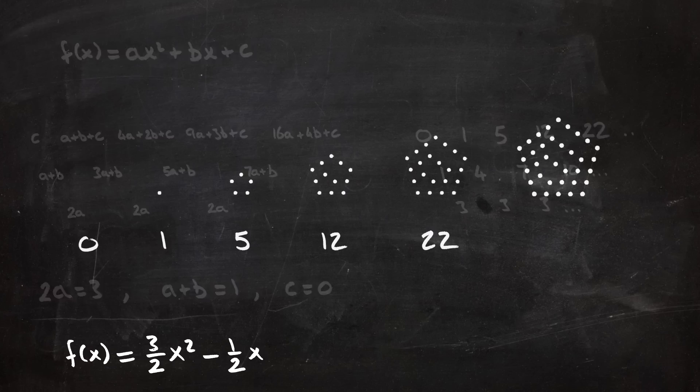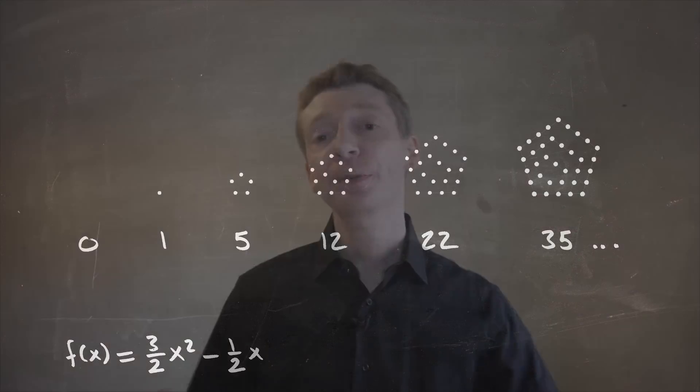Which means the final polynomial is three halves x squared minus a half x. And the next value in our sequence will be when x is equal to five, that's our fifth pentagonal number, which is 35, and that is true. We can calculate any pentagonal number that we want. So that's the procedure, it's just a way of solving some simultaneous equations.